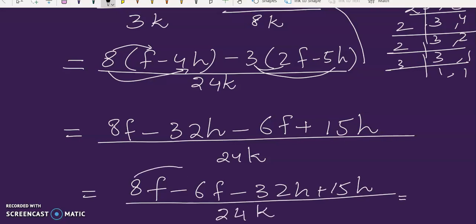8f minus 6f, minus 32h plus 15h over 24K. Now 8 minus 6 is 2, minus 32 and plus 15, it gives us minus 17h over 24K. So this is your answer.